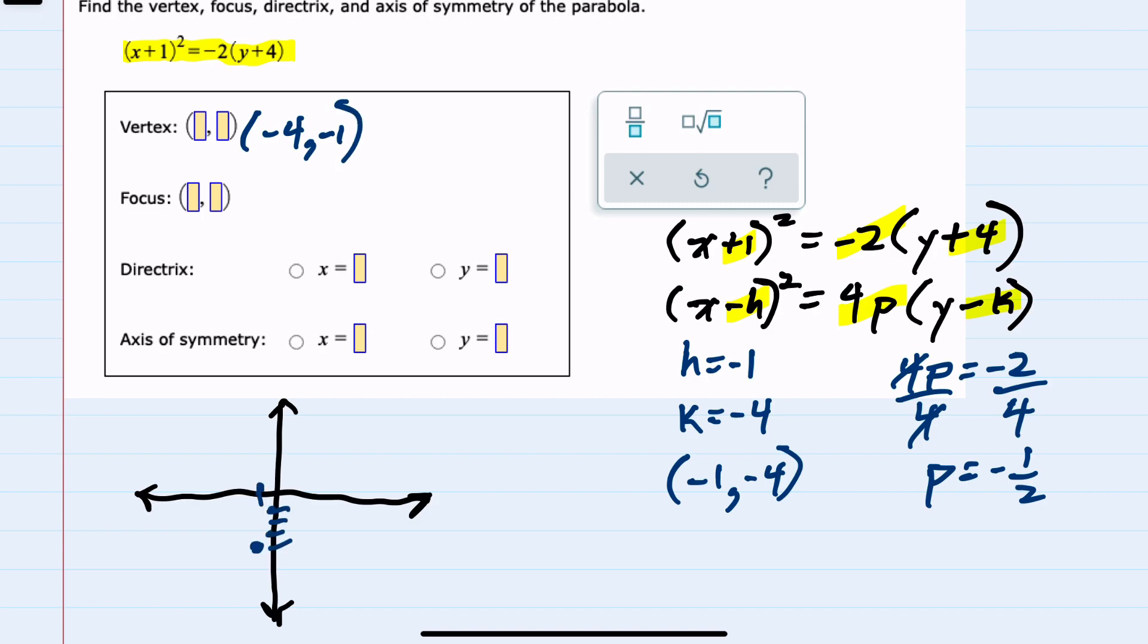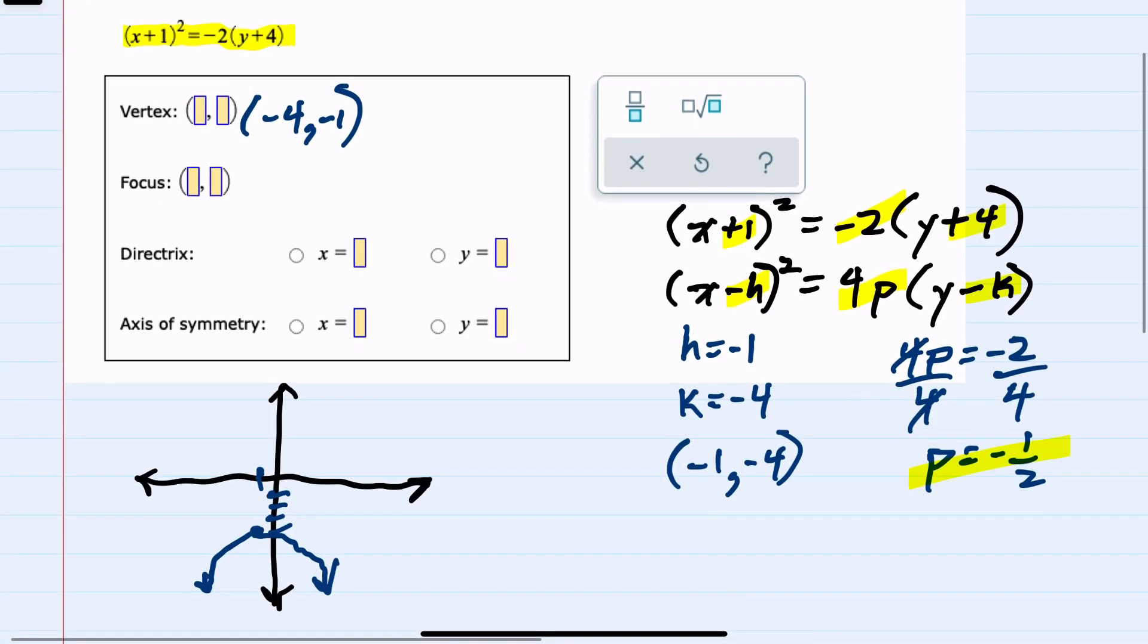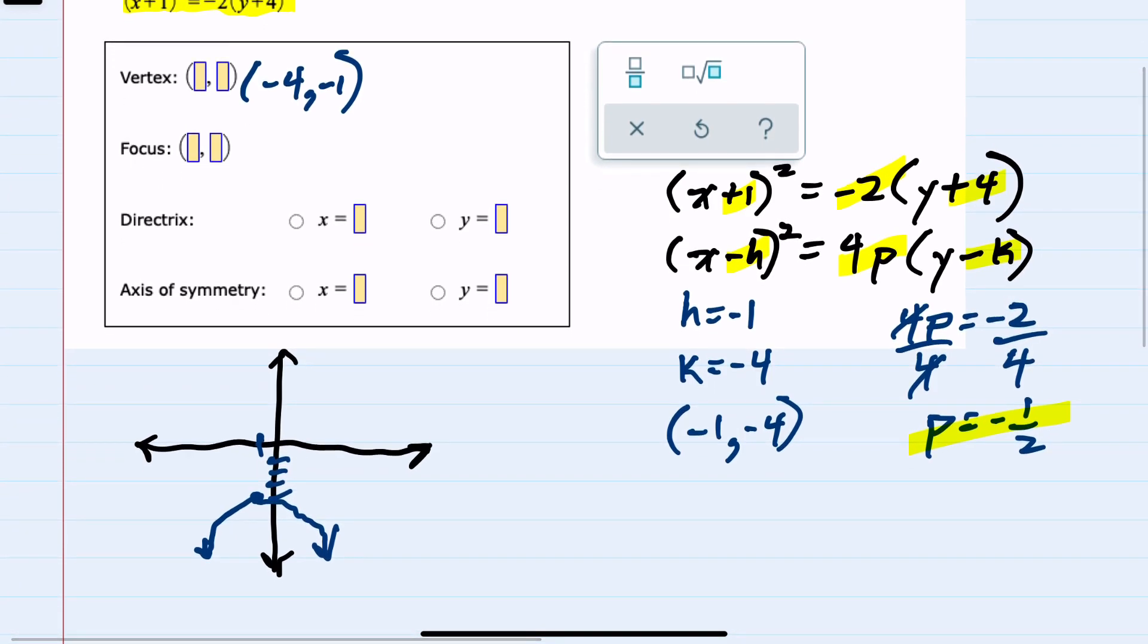I know that my parabola in this form is going either up or down. And since my p value is negative, that means it will be going down. The p value of negative 1 half tells me how far away the focus would be. So our focus is inside the parabola. It's going to be directly below the vertex. And this distance is p. So that distance is 1 half. Negative 1 half because it's down, but the distance is 1 half.